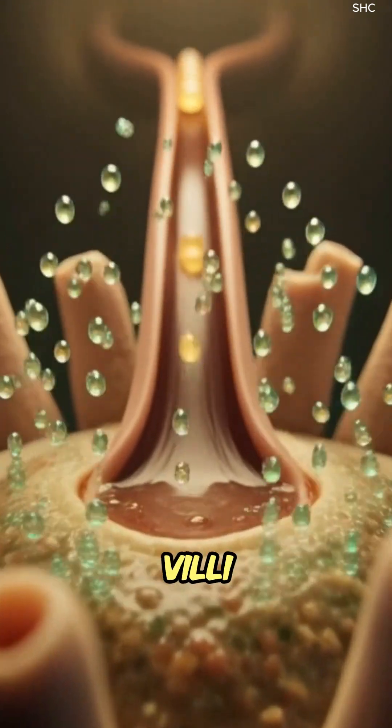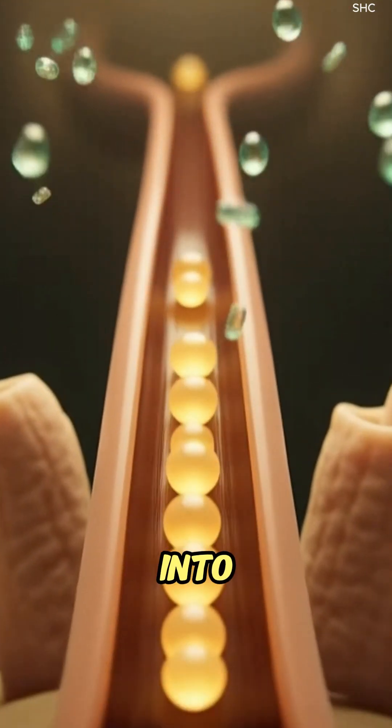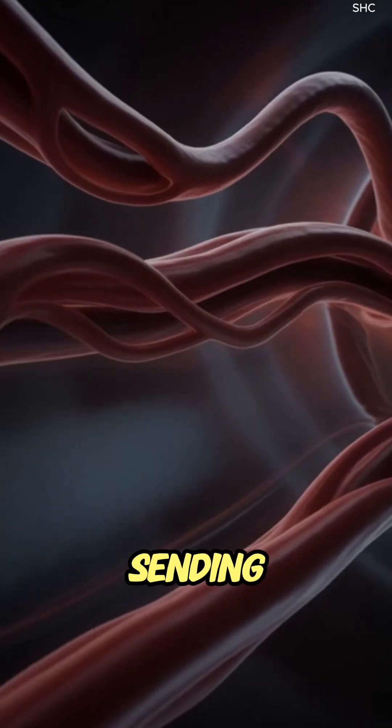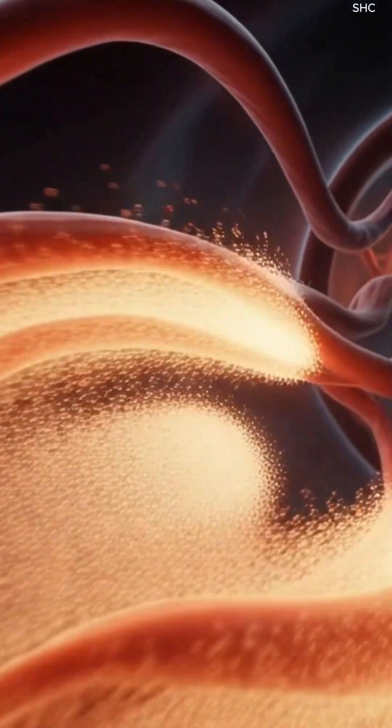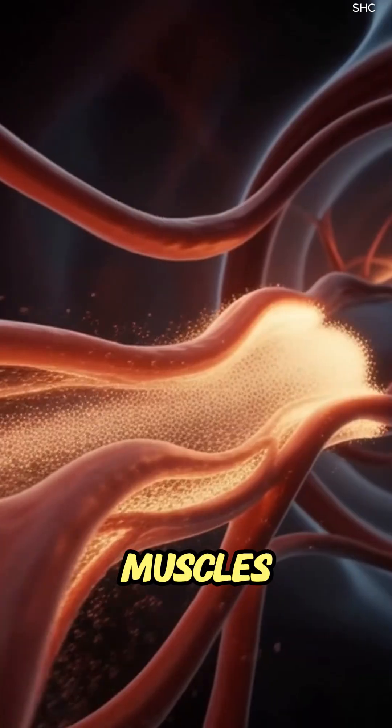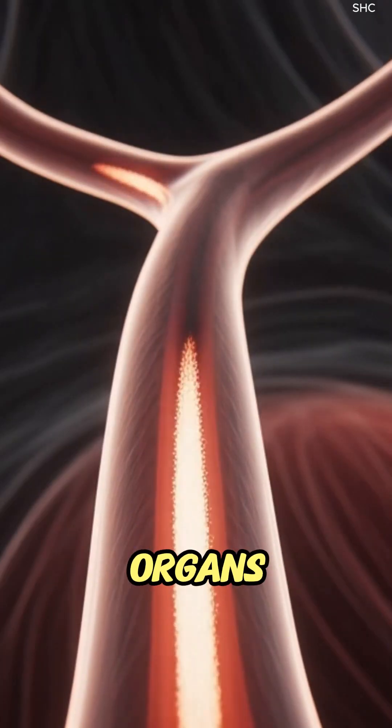In the small intestine, villi absorb these nutrients into the bloodstream, sending steady glucose to the brain, amino acids to muscles, and micronutrients to organs.